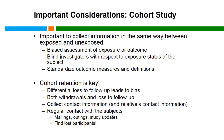There are important things to consider when doing a cohort study. First, information collected from study participants must be collected in the same way between the exposed and unexposed groups — if not done properly, you risk introducing bias. It's also important to blind investigators to the extent possible regarding both the exposure and disease status of participants. You'll want to standardize outcome measures and definitions across the study. Also critical is retention — if you lose participants to follow-up at different rates among exposed and unexposed groups, you risk introducing bias. This is also true among withdrawals, so maintaining regular contact with participants is essential.